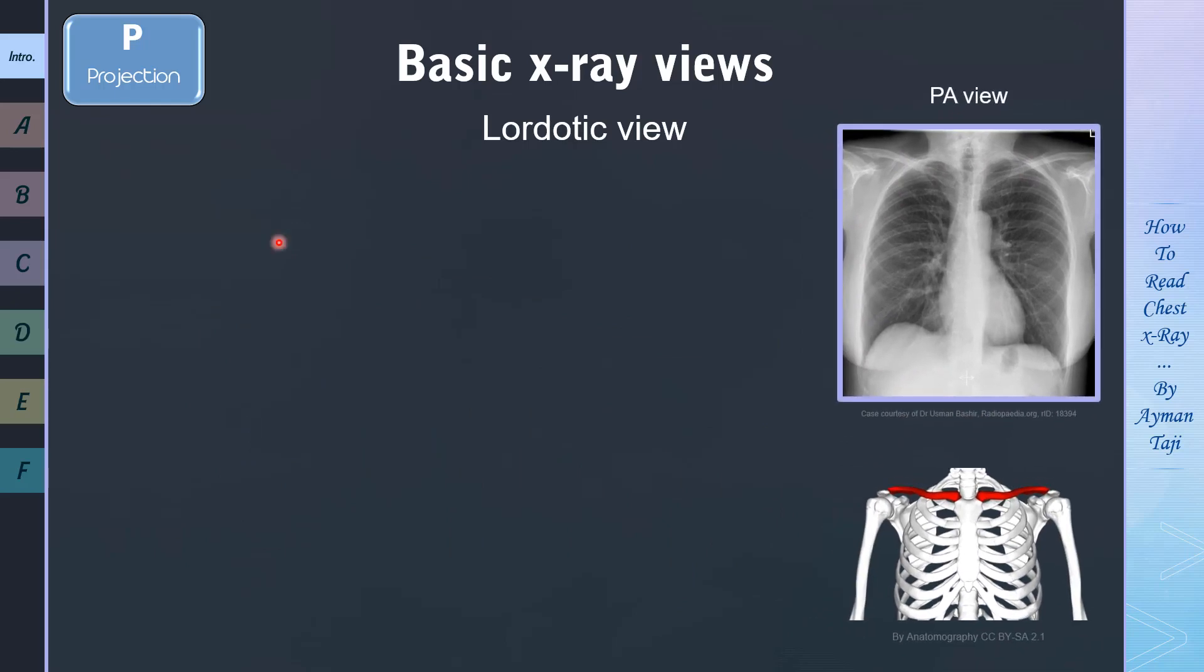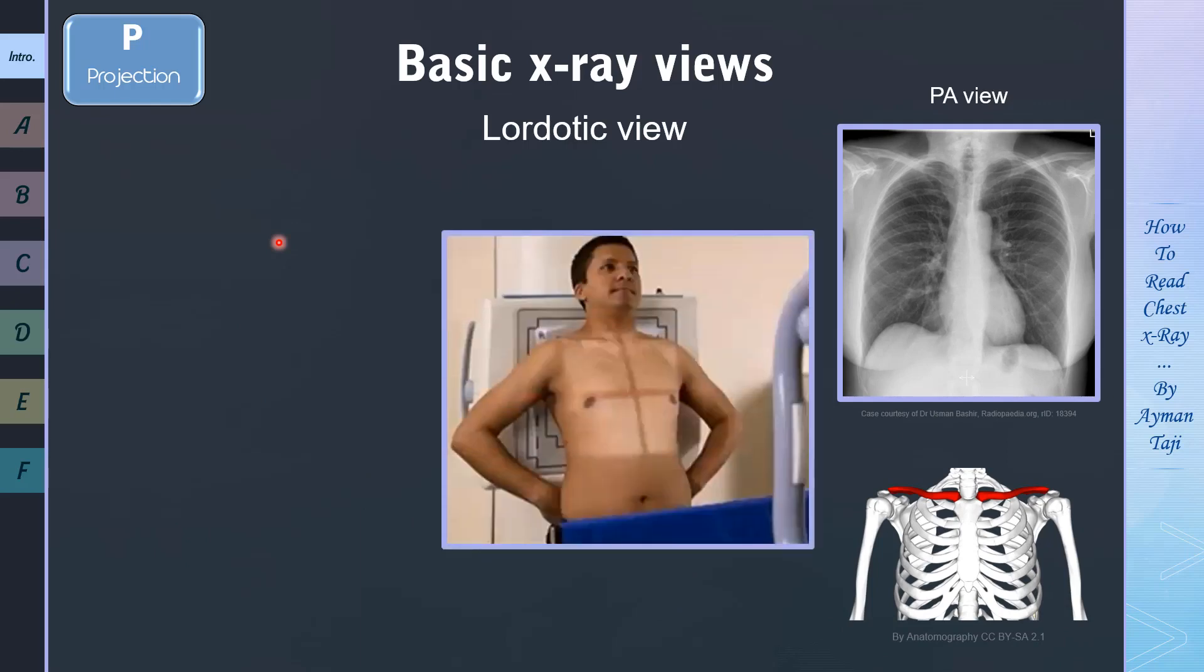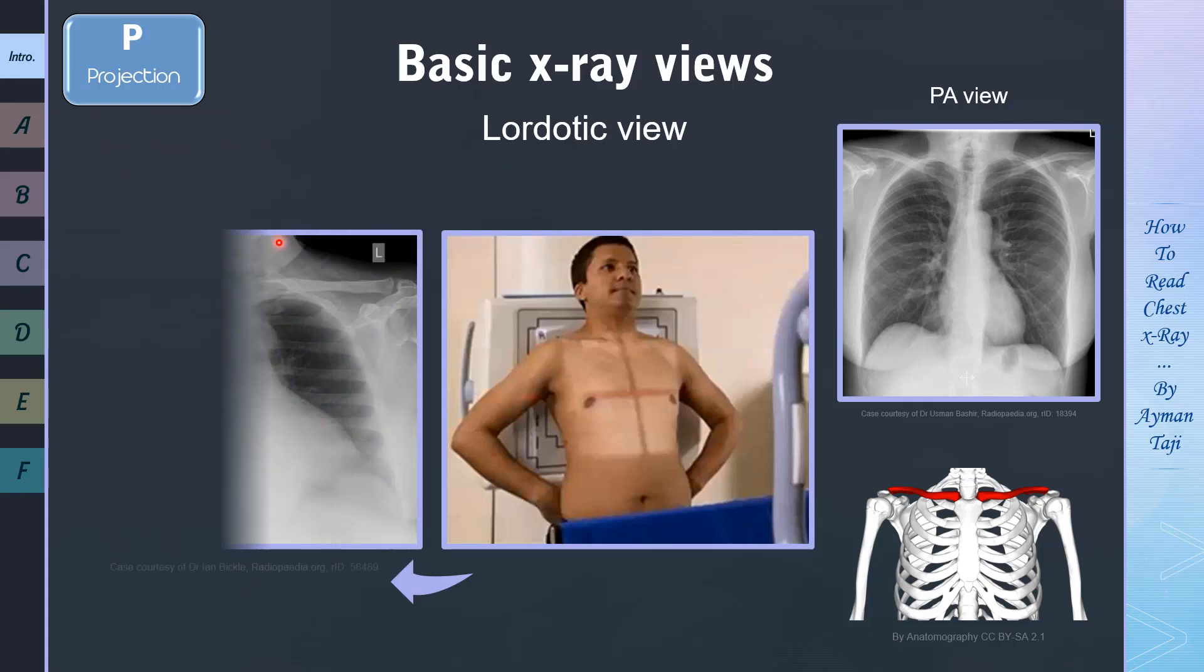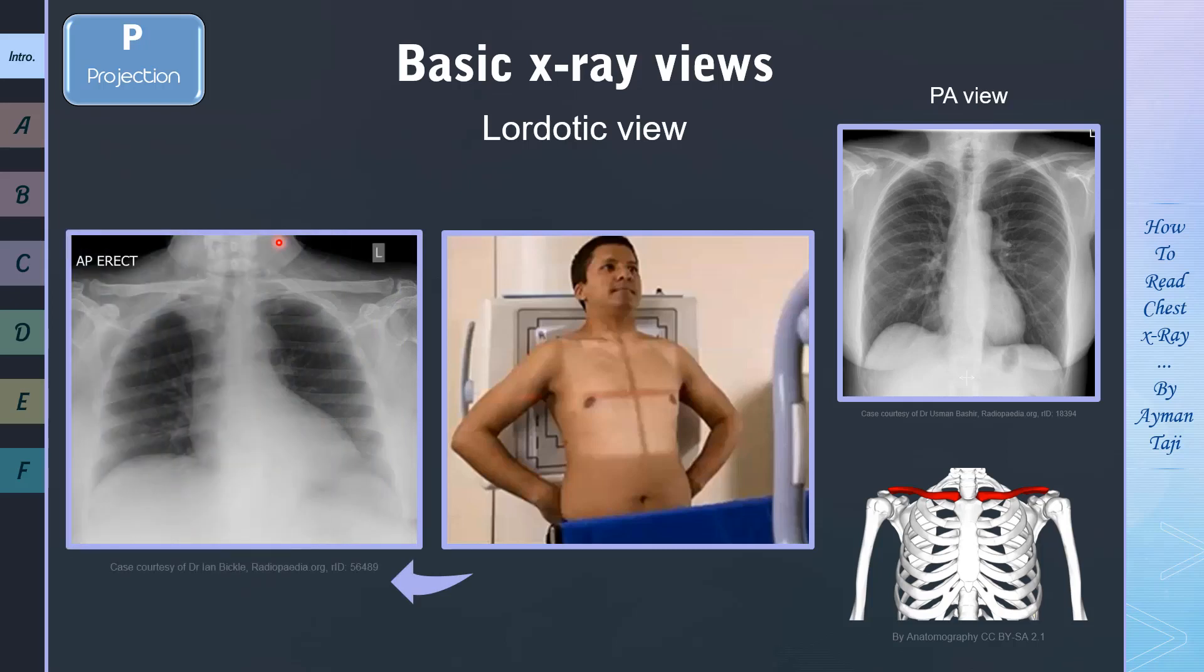we ask the patient to stand with feet approximately 30 cm away from the image receptor, with back arced until upper back, shoulders, and head are against the image receptor. And the result, as we can see, that clavicles are projected superiorly clear of the lung fields, and now we can assess the apices clearly.